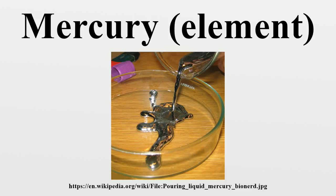Alchemists thought of mercury as the first matter from which all metals were formed. They believed that different metals could be produced by varying the quality and quantity of sulfur contained within the mercury. The purest of these was gold, and mercury was called for in attempts at the transmutation of base metals into gold, which was the goal of many alchemists.